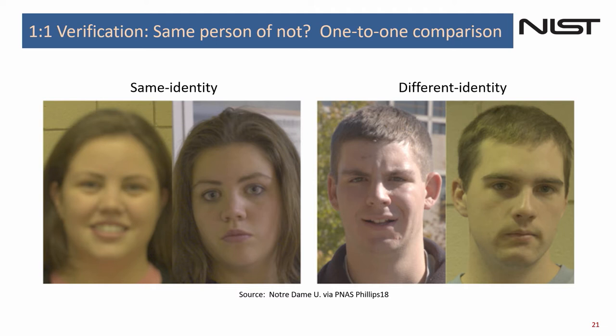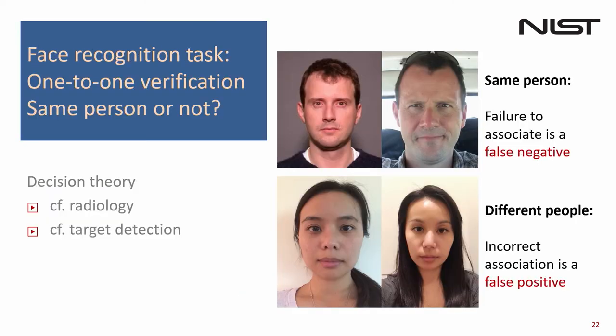There are two kinds of errors that face recognition systems make. They are tasked with saying: same person or not — compare two photos and answer the question. If you falsely declare that two people are the same when they're not, that's a false positive. If you say that one person is a different person from two photographs, that's a false negative. This kind of decision apparatus appears throughout many fields: a radiologist looks at a CT scan and says 'cancer or not,' a medical test looks at a coronavirus sample, or on a battlefield you determine whether there's a tank in the trees. The consequences of those mistakes are heavily application dependent.